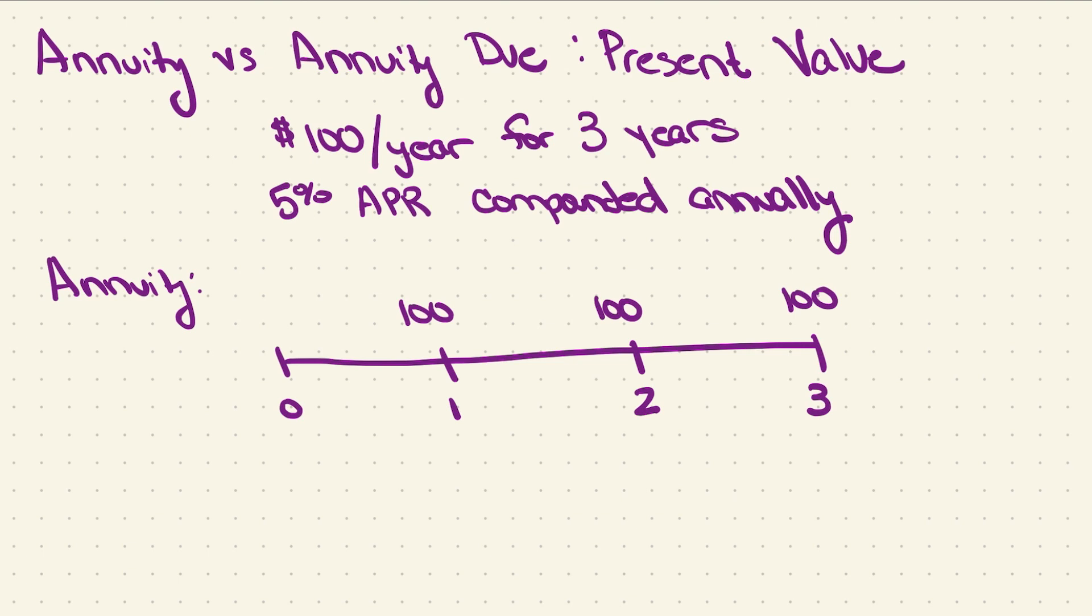The example problem we're looking at is $100 per year for three years, and the rate is going to be 5% APR compounded annually.